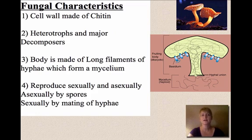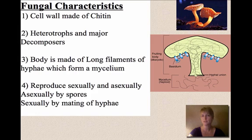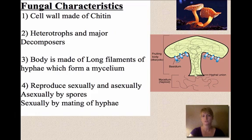The characteristics of fungi: the cell wall is made of chitin, which is a carbohydrate that provides a lot of structure to the cell wall. That cell wall is not made of cellulose like in plants, but is made of chitin — that's one of the reasons why fungi are in a different category than plants.